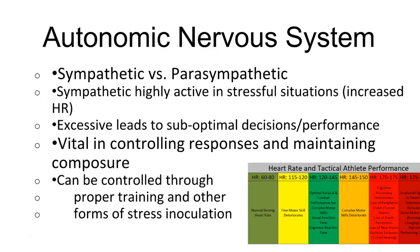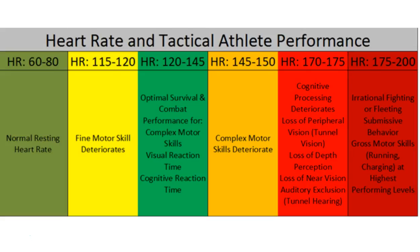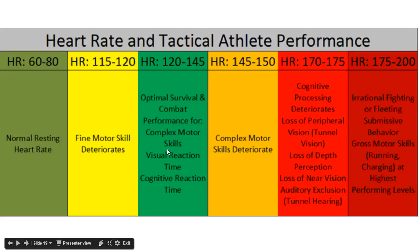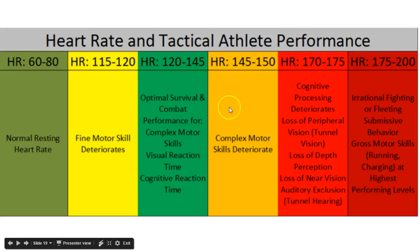To explain this graph: at your normal resting heart rate, as you get more stressed and your heart rate goes up, your fine motor skills can start to deteriorate. This can occur even in highly trained individuals. The optimal zone is 120 to 145 BPM, where visual reaction time and cognitive reaction are at their best.